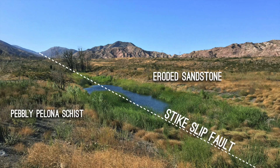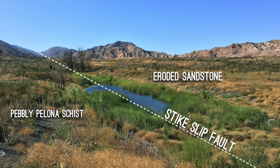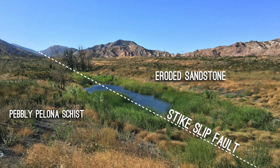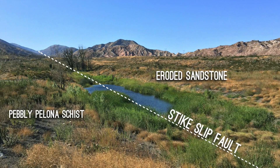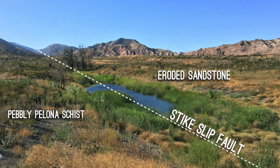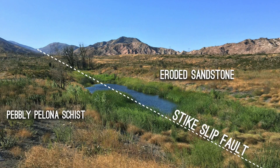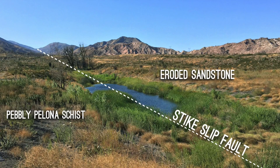An interesting thing to note: the shore on one side of the sag pond was made up of a pebbly Pelona schist, and on the other side was an eroded sandstone. This sag pond in particular is infamous for myths and legends about the pond being bottomless and about bodies being sucked down to the bottoms of the earth.